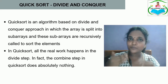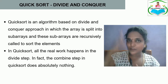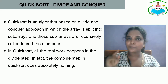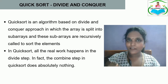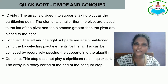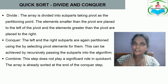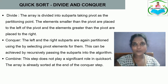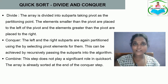In quicksort, the array is not divided based on the mid element. It is divided based on a pivot element chosen from the array. You can select the pivot element as either the first or the last element, but generally we always perform quicksort by selecting the last element as the pivot.